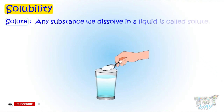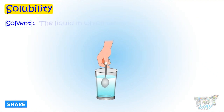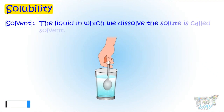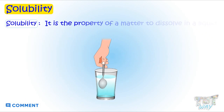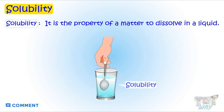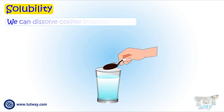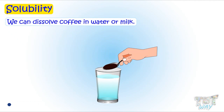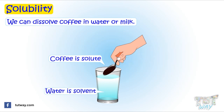Solubility. Any substance we dissolve in a liquid is called solute, and the liquid in which we dissolve it is called solvent. Solubility is the property of matter to dissolve in a liquid. Like we can dissolve coffee in milk or water — here coffee is the solute and milk or water is the solvent.